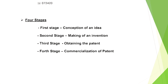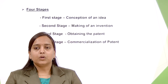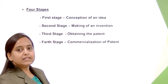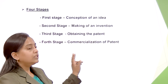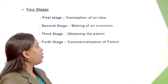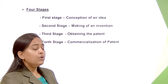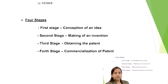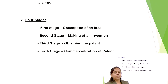Basically, the patent process involves four different stages. The first stage is the conception of an idea, the second is the making of the invention, the third is obtaining the patent on that invention, and the fourth stage is the commercialization of the patented invention. For example, if a person wants to invent a robotic machine for serving medical equipment in hospitals or serving food in restaurants to maintain social distancing during the COVID-19 pandemic,